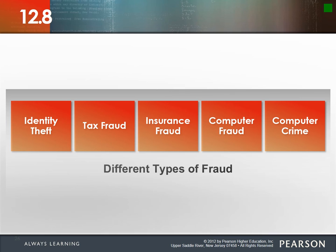Insurance fraud: about 10 percent of all insurance claims are fraudulent. An example: someone in a car accident tried to claim pre-existing damage as accident damage. Investigators could tell because there was rust at the impact point — new damage wouldn't have rust. Insurance companies are very savvy about detecting this kind of fraud.